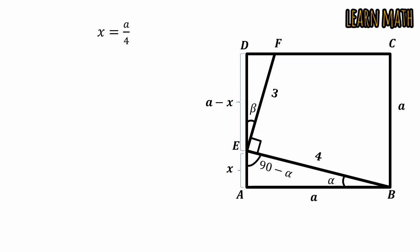So AE is equal to a by 4. Now the triangle BAE is a right angle triangle, so by using Pythagorean theorem we can write a squared plus a by 4 whole squared is equal to 4 squared.